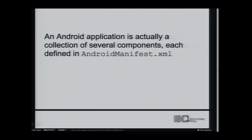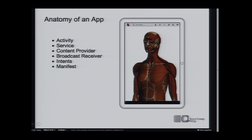An Android application is really a series of loosely coupled components. The thing that holds them all together and makes them into an application is the Android manifest file. The four major components are the activity, service, content provider, and broadcast receiver. I'll take you through what intents are and why they're so key to the Android system, then come back to the manifest and how you string these things all together.